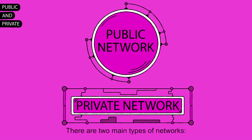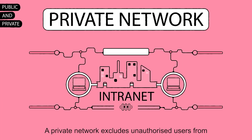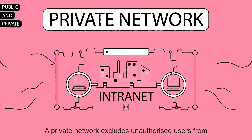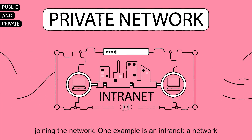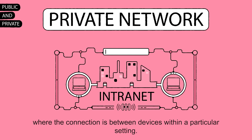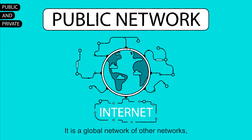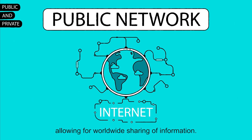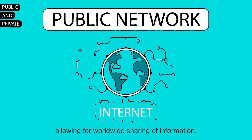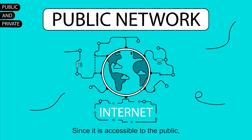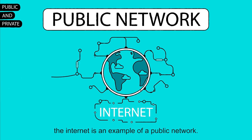There are two main types of networks: public networks and private networks. A private network excludes unauthorized users from joining the network. One example is an intranet, a network where the connection is between devices within a particular setting. The internet is also a type of network — it is a global network of other networks, allowing for worldwide sharing of information. Since it is accessible to the public, the internet is an example of a public network.